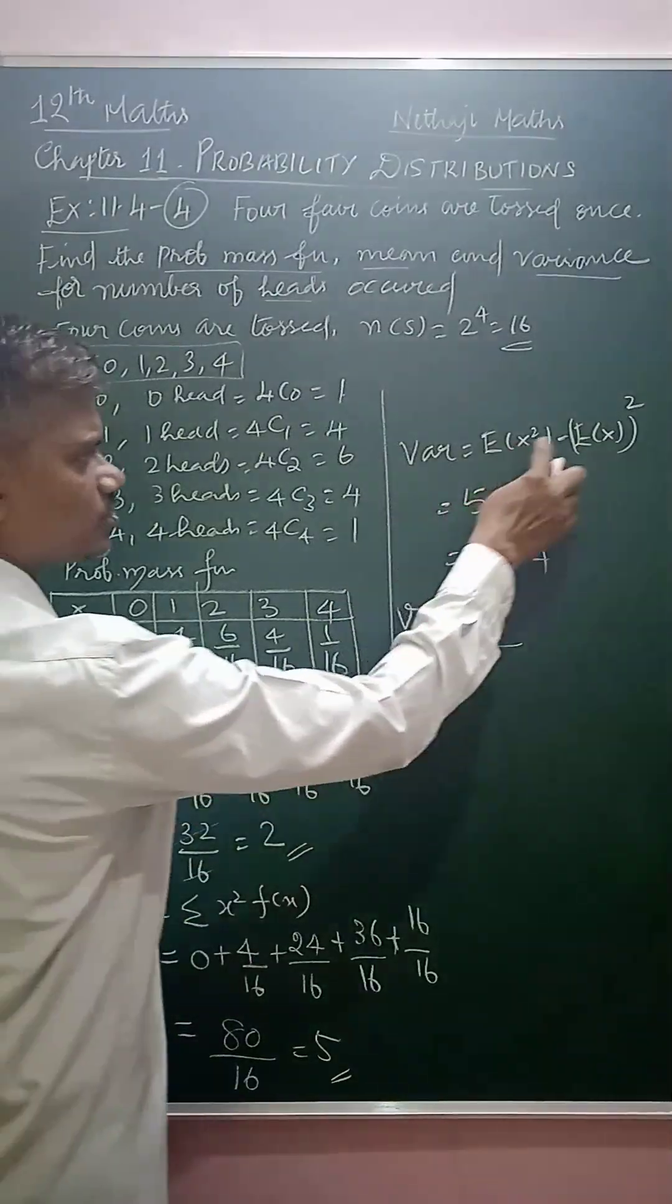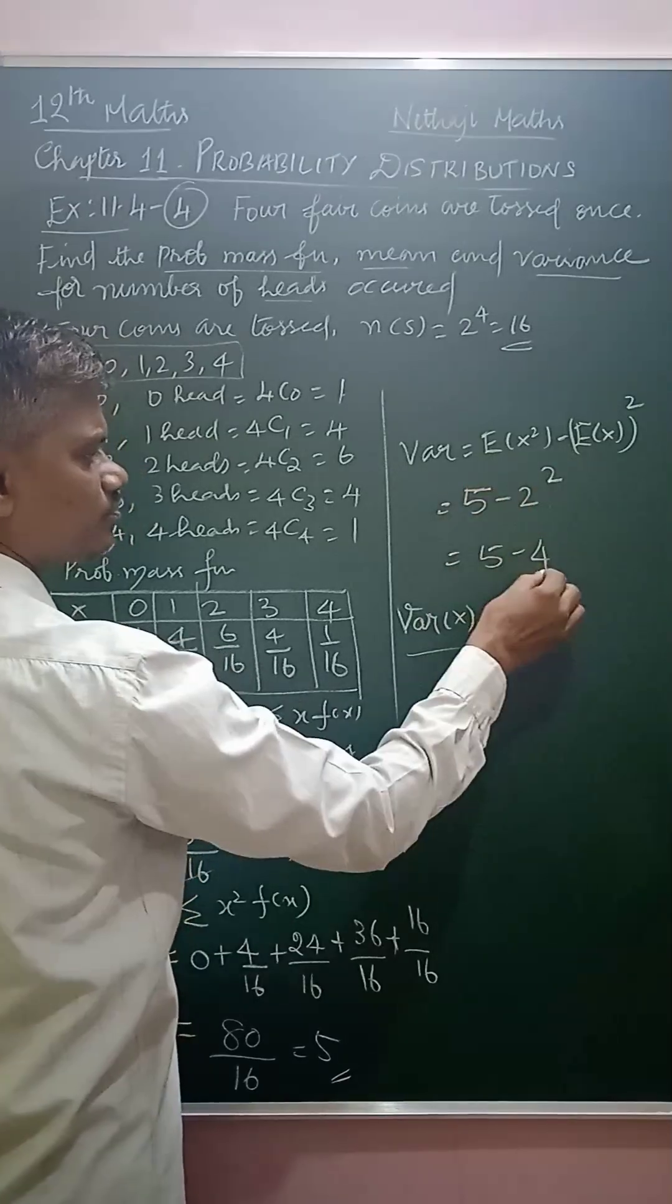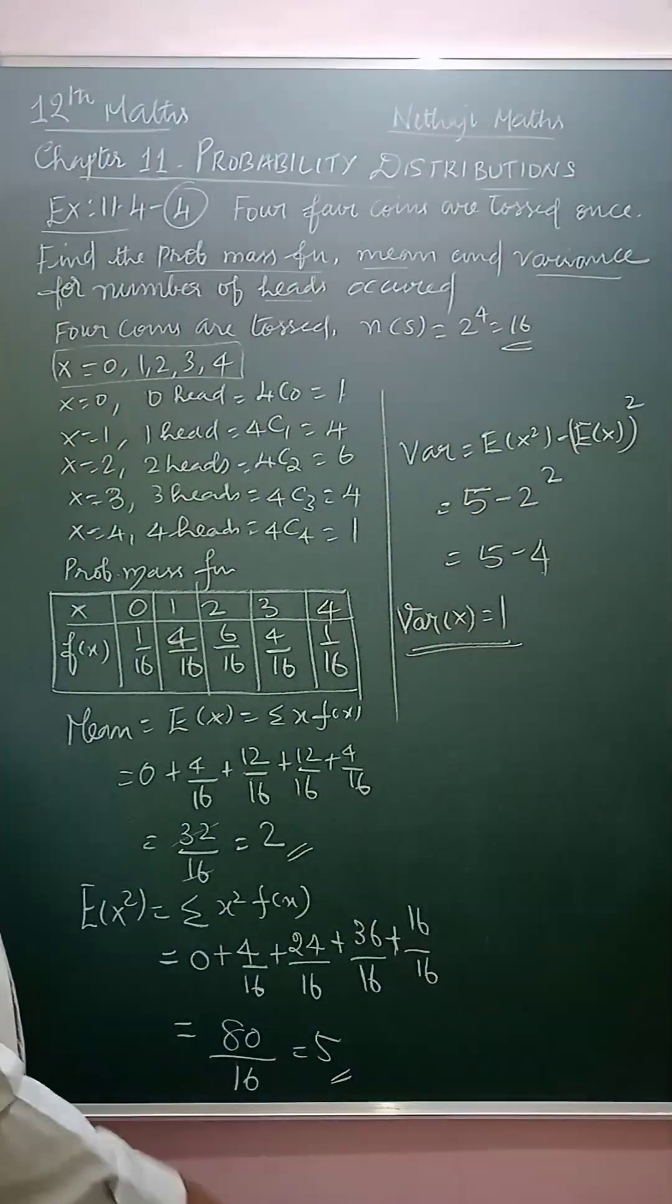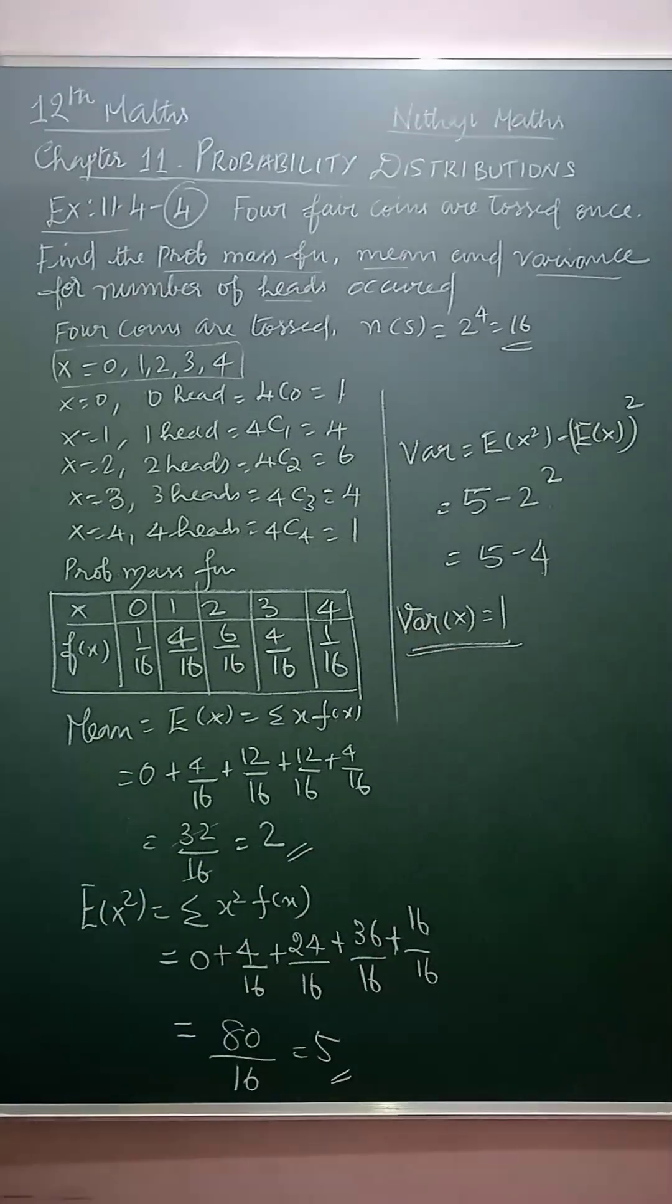Now, variance can be found. E of x square minus E of x whole square. 5 minus 2 square. 2 square is 4. 5 minus 4 is 1. So, this is the value of the variance. So, probability mass function, mean and the variance. That's all. Thank you.